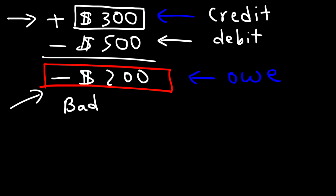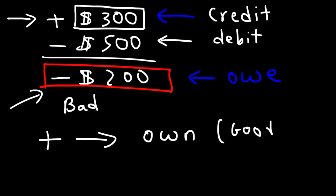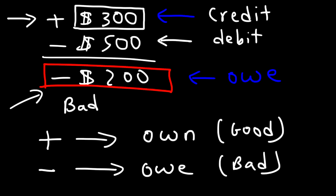Hopefully this illustration helped you understand how negative numbers relate to financial matters. If your account value is positive, this reflects money that you have in your possession — money that you own, and that's a good situation. If your account value is negative, this is money that you owe — someone else's money that you have to pay back. Positive numbers reflect values above zero and negative numbers reflect values below zero.